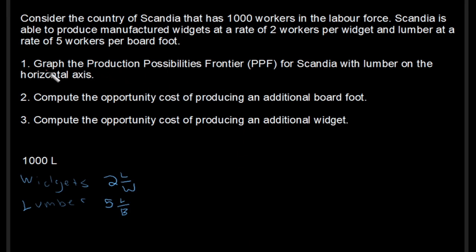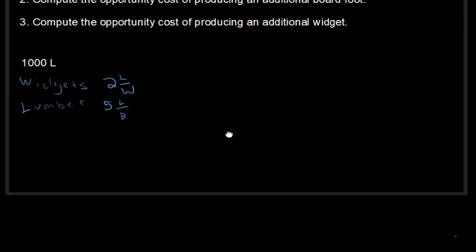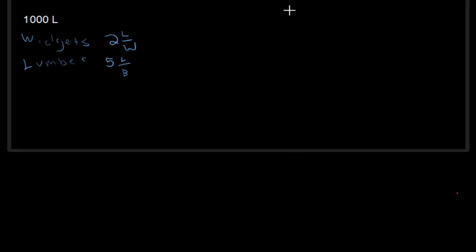Now, what is my actual question? Let's graph the PPF for Scandia with lumber on the horizontal axes. Okay, let's just scroll down a bit here. Let's get some room. Oh, I accidentally deleted that. How did that work? Ah, per board foot. Let's scroll down to make some room. So, let's give that a quick draw here. We have our axes. There's my vertical. There's my horizontal. Wow, let's keep that an actual straight line. There we go. And I have lumber. So, lumber, I'm measuring lumber in board feet. And I'm measuring widgets in widgets W.